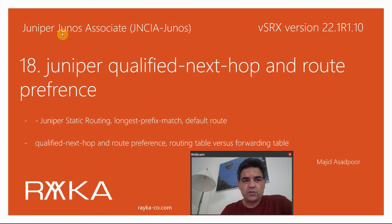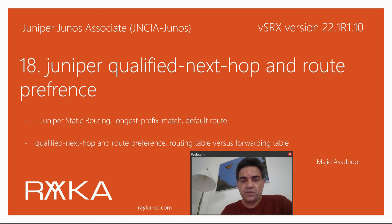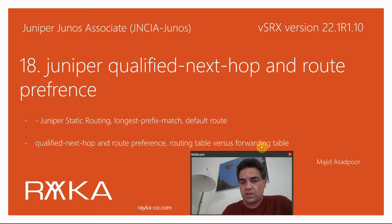Welcome to another video in the Juniper Junos associate course. In this video we will configure topics related to Juniper static routing that we discussed theoretically in the previous section, including longest prefix match, default route, qualified next hop, route preference, and the difference between routing table and forwarding table in Juniper devices.